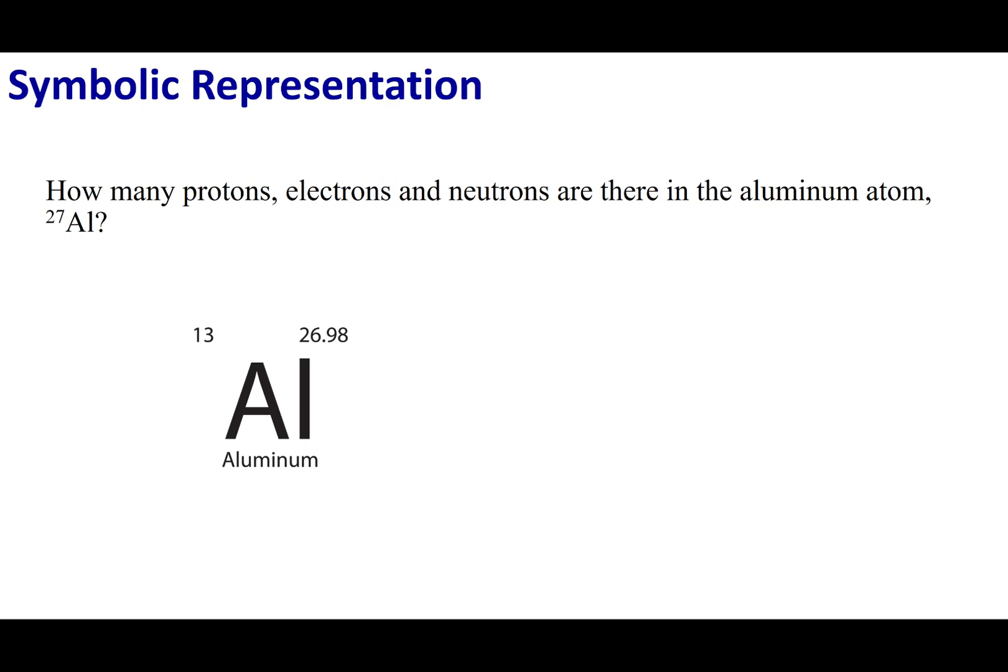The first thing you want to do is you want to go ahead and look up aluminum on the periodic table. I put its symbol right here. What we can do is write aluminum very formally, and that means we have aluminum 27 up at top for my mass number and 13 on bottom for my atomic number.